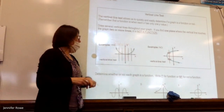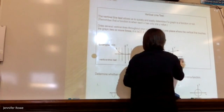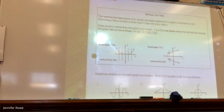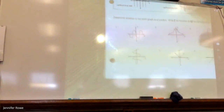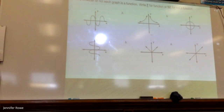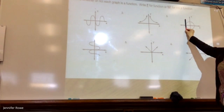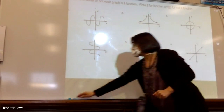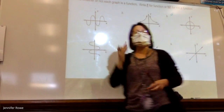Now let's look at some examples. Most of the time I actually don't draw the line — I use my pencil and just pass it through the graph to see what we get. Let's start with number three — I'll start on the left side. How many times does my marker touch that circle? One time. But the minute I move it over, it touches twice — there and there. So you're going to write NF for not a function.